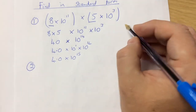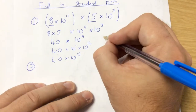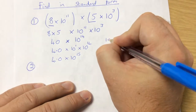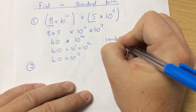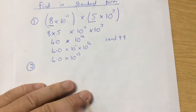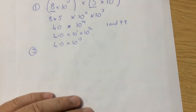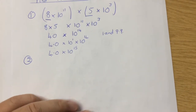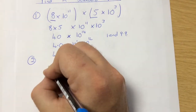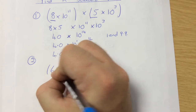Remember, standard form has always got to be between 1 and 9.9, so because it's 40 it's too big. Let's do another one like that just to make sure you understand that concept.